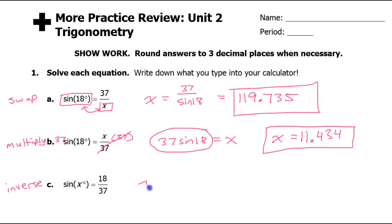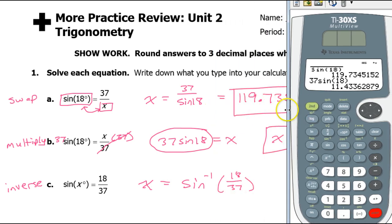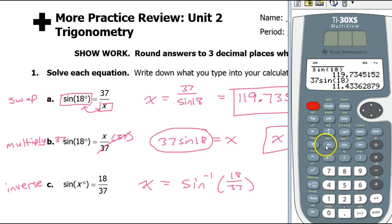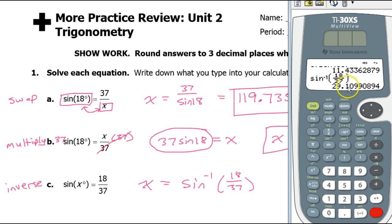Inverse means that x will equal the inverse sine of 18 over 37. And this is what you put in your calculator. So I need to do the inverse sine of 18 over 37. So that is 29.10 — got to round up. So 9 will round up to 10, so instead of 09, I will have 10 here. So 29.110.